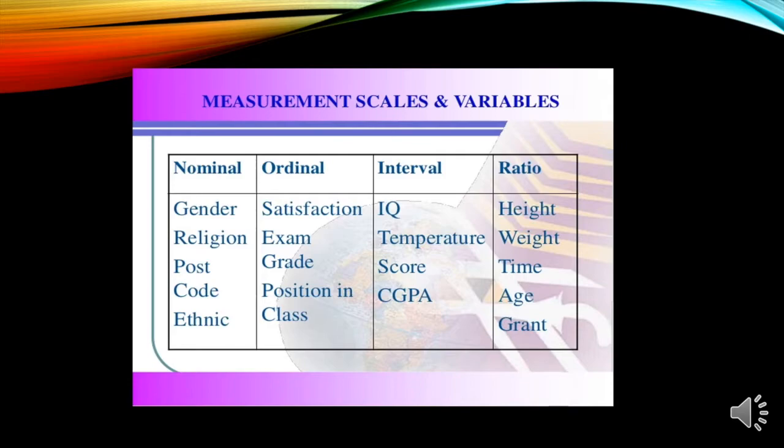We have exam grade, you're pass or failed. Then position in class. When we say interval, examples of this are the IQ, temperature, score, and CGP. Then when we say ratio, samples of this data are the height, the weight, time, age, and rank.